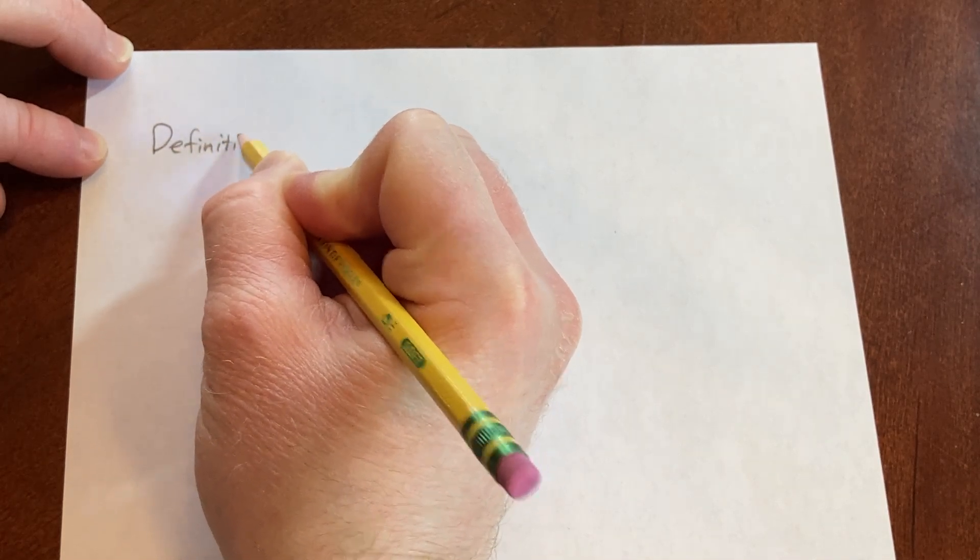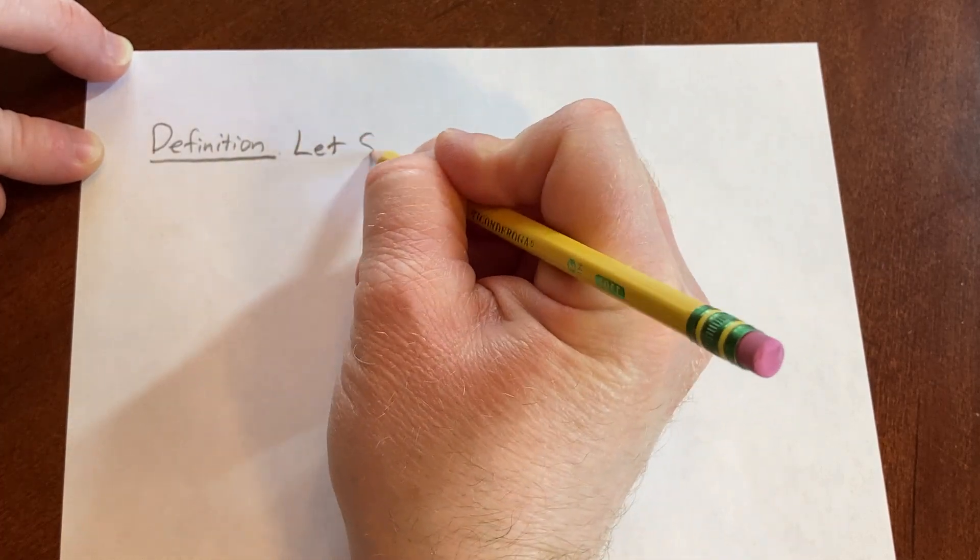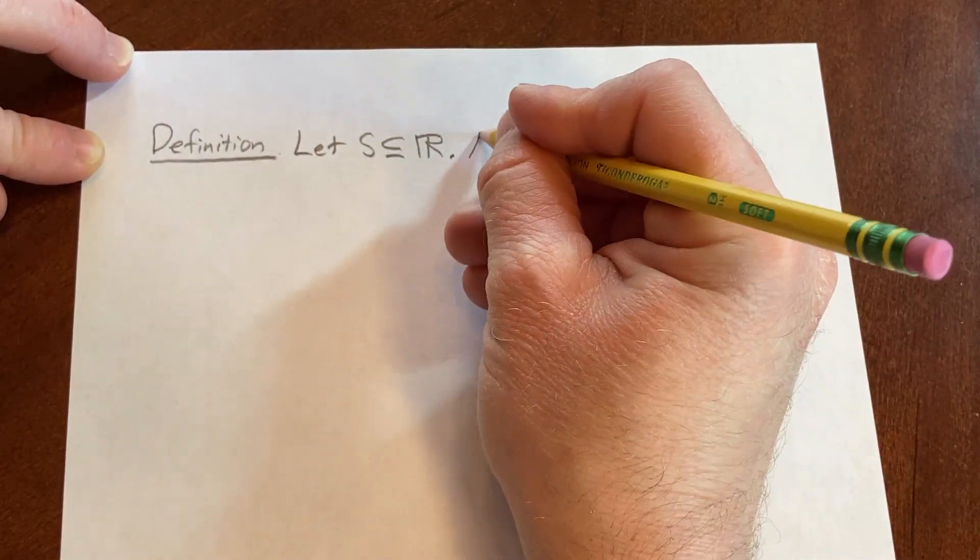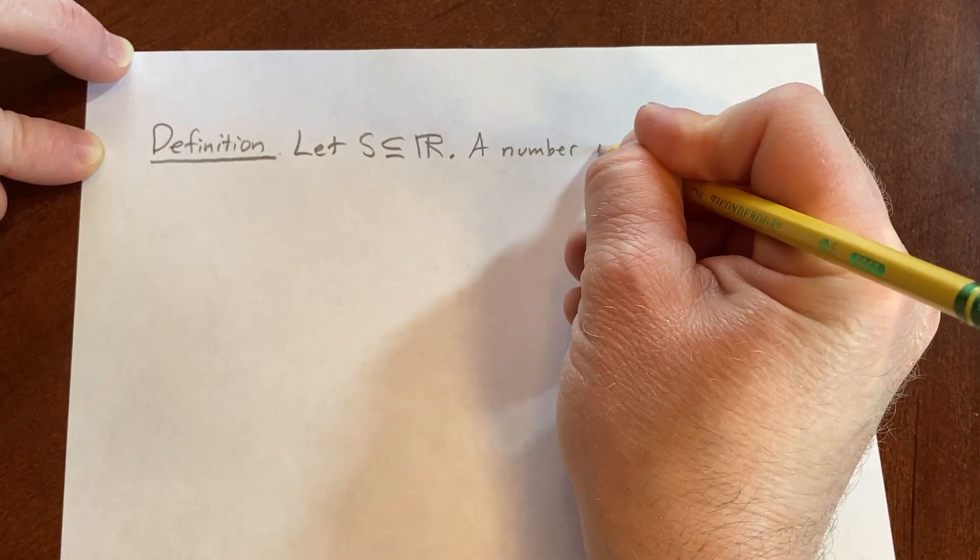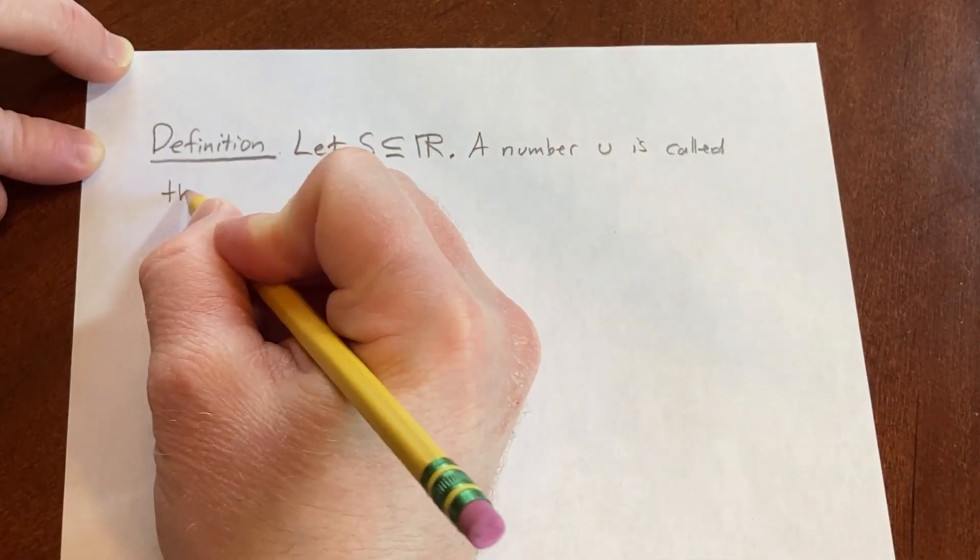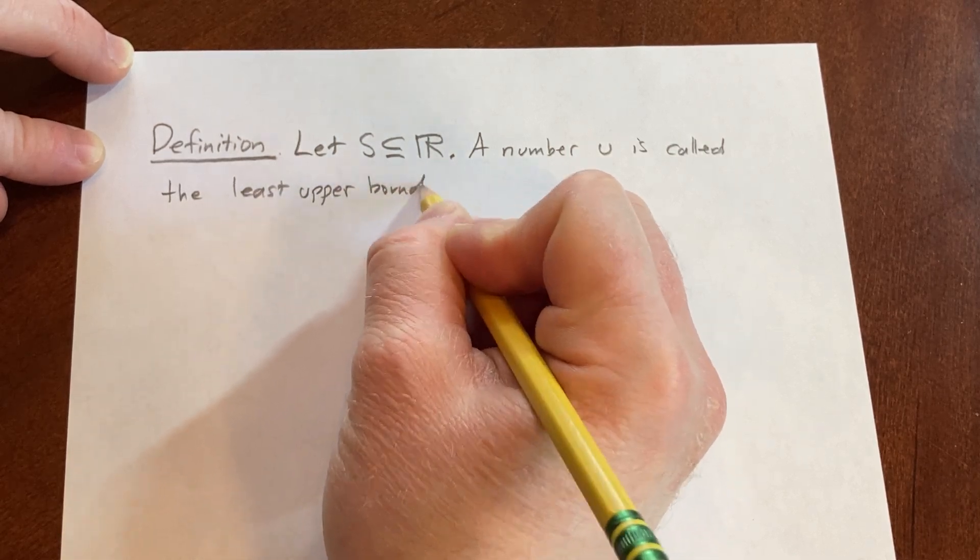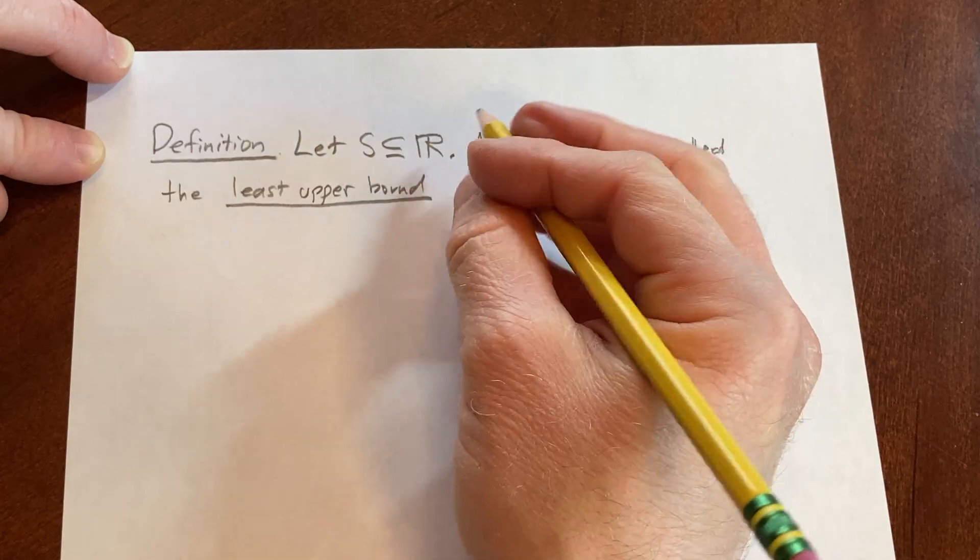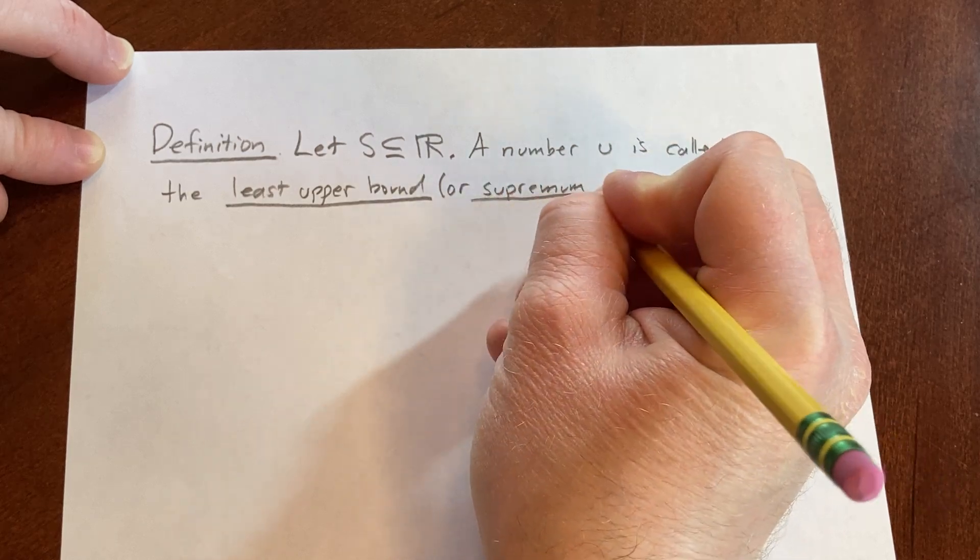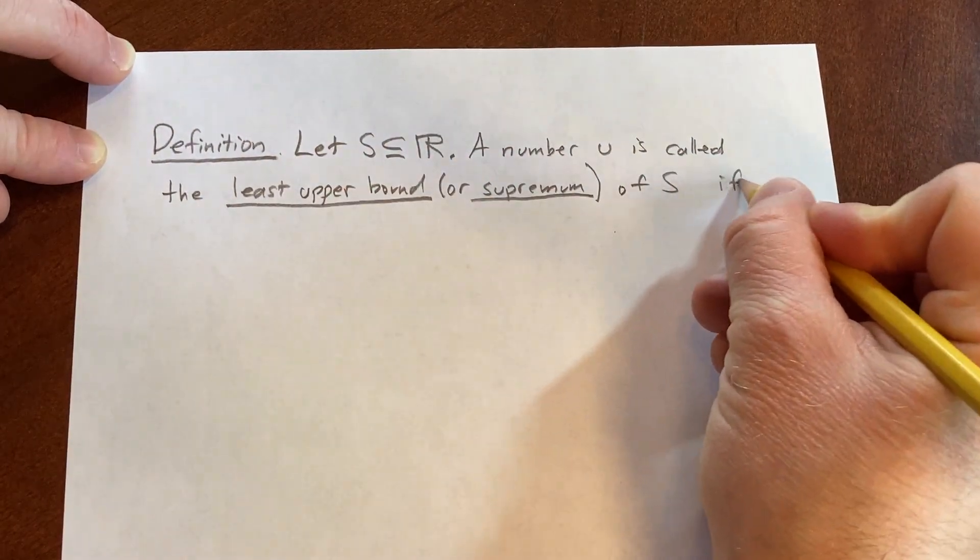So definition. Let S be a subset of the real numbers, so S is a subset of R. A number, little u, is called the least upper bound, or supremum, of S if - and there are two conditions.